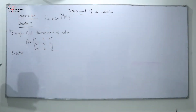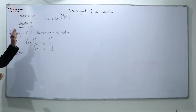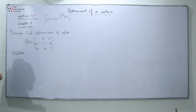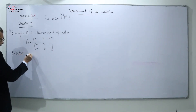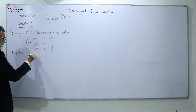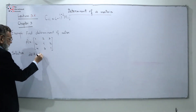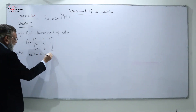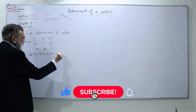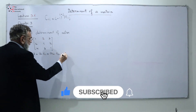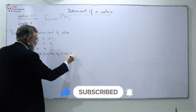Take another example. I want to find the determinant of matrix A. I'm going to open it along the first column instead of the first row as in the last example. So I can say my determinant of A is equal to A11·C11 plus A21·C21 plus A31·C31.